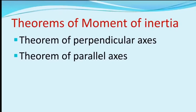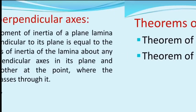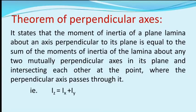To find the moment of inertia about various axes, we use two theorems: the theorem of perpendicular axes and the theorem of parallel axes. The theorem of perpendicular axes applies to a plane lamina or planar body. It states that the moment of inertia of a plane lamina about an axis perpendicular to its plane is equal to the sum of the moments of inertia of the lamina about any two mutually perpendicular axes in the plane intersecting each other at the point where the perpendicular axis passes through it. Therefore: Iz = Ix + Iy.